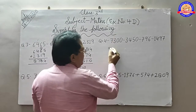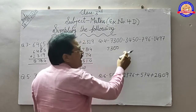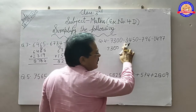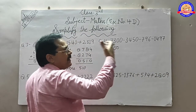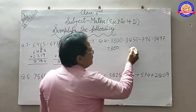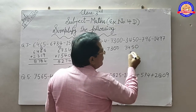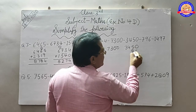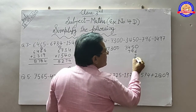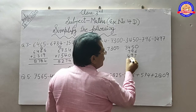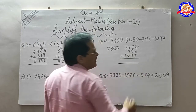इसको copy करेंगे: 7, 3, 0, 0. अब इसमें देखेंगे — यहाँ कोई plus नहीं है, कोई भी plus नहीं है. तो जो आपके minus के हैं, उनको plus करेंगे: 3, 4, 5, 0, 6, 9, 7, 7, 9, 4, 1. इन तीनों को plus करेंगे.